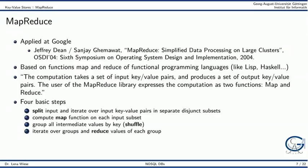First, we split the input key value pairs into separate disjunct subsets. Then, we independently compute the map function on each subset. The intermediate results are grouped by key in a shuffle step. Lastly, the reduce function computes the final result on each group.